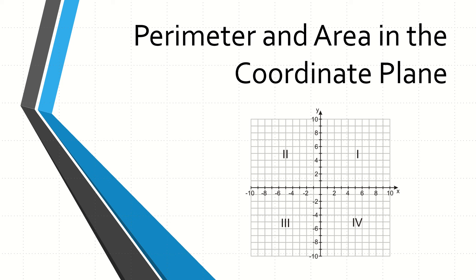Hello everybody, welcome to the video. Today we're going to be going over how to find perimeter and area in the coordinate plane. Just a quick reminder that the coordinate plane is just this x-y coordinate grid with these four quadrants.